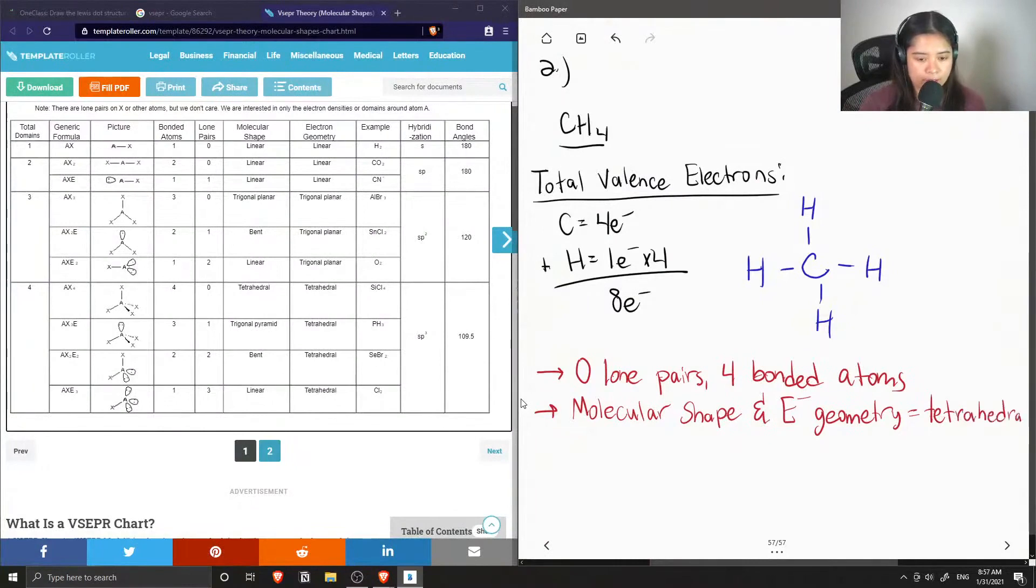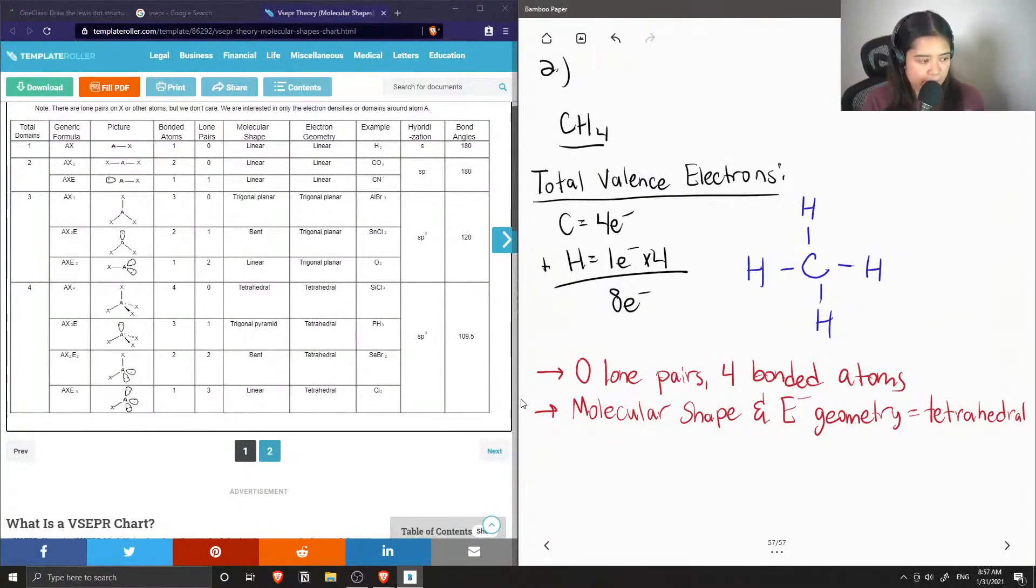Since there are no lone pairs on the carbon, the molecular shape and electron geometry are the same.